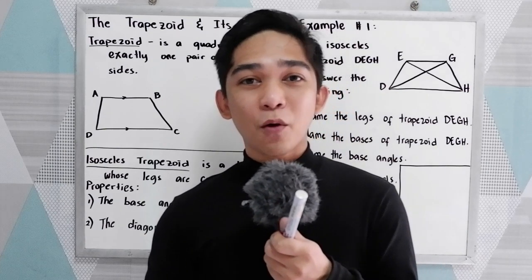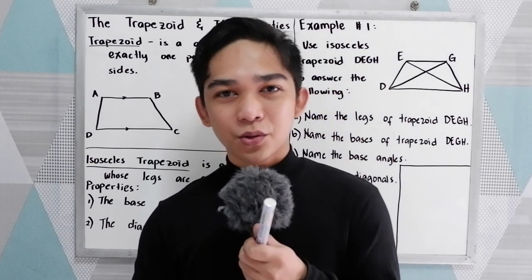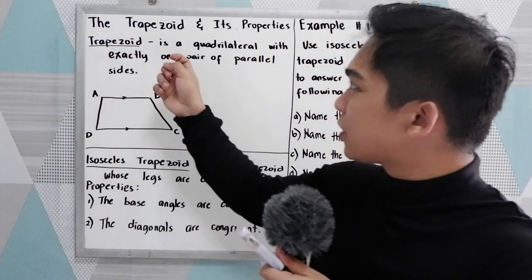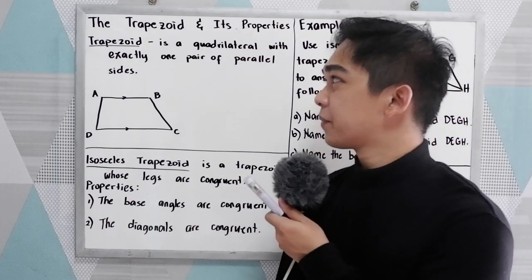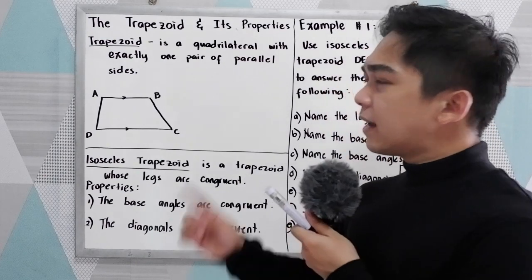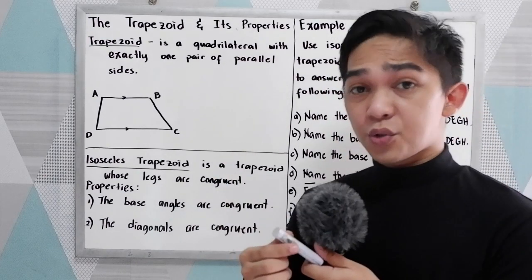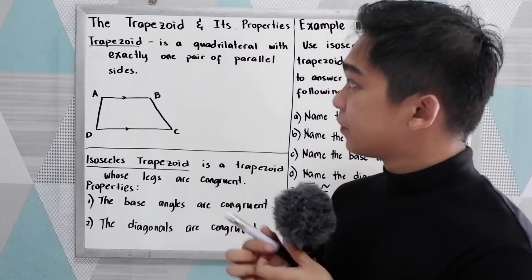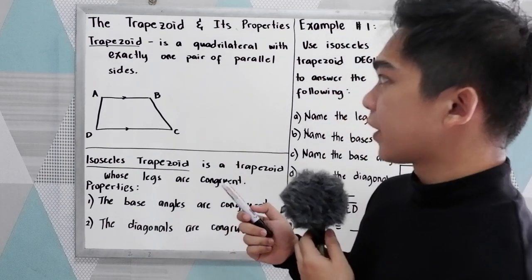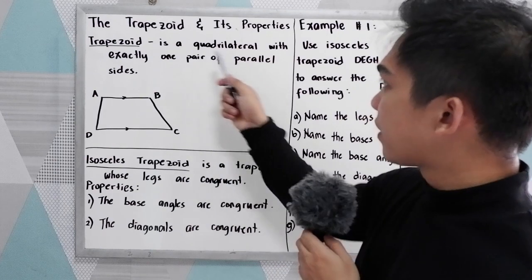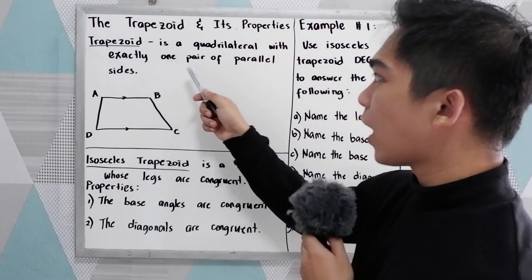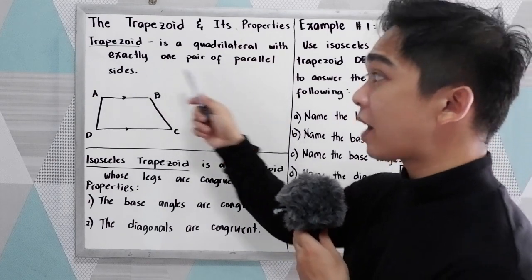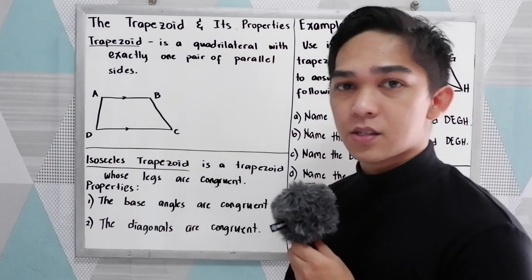Good day everyone. Today I will be discussing the trapezoid and its properties. Let us define what a trapezoid is. A trapezoid is a parallelogram with exactly one pair of parallel sides.